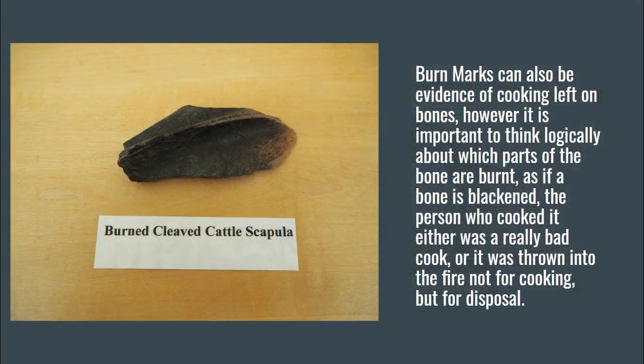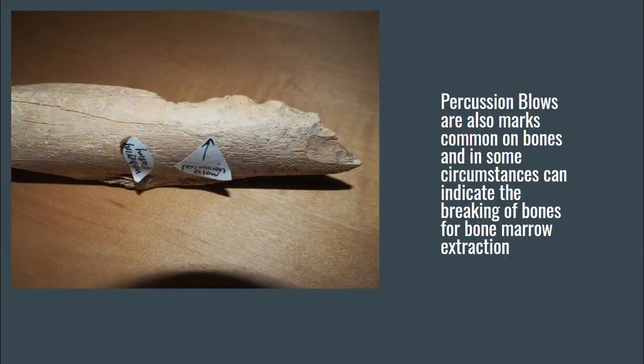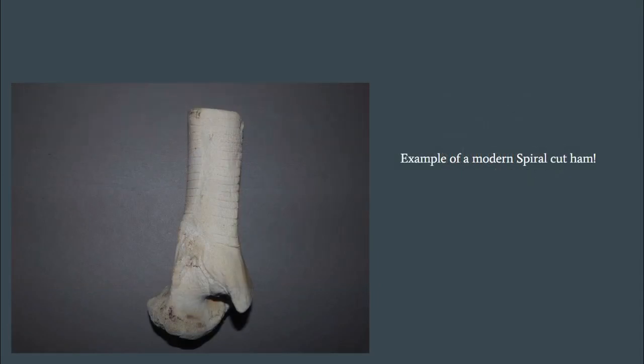Burn marks can also be evidence of cooking left on bones. However, it is important to think logically about which part of the bones are burnt, as if a bone is blackened, the person who cooked it either was a really bad cook, or it was thrown into the fire — not used for cooking, but instead just disposed of. Percussion blows are also common marks found on bones, and in some circumstances this can indicate the breaking of bones for bone marrow extraction. Here I included a modern example of a spiral cut ham to showcase another way that butchery marks can appear on bone.